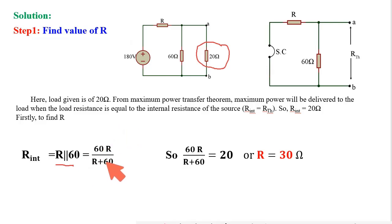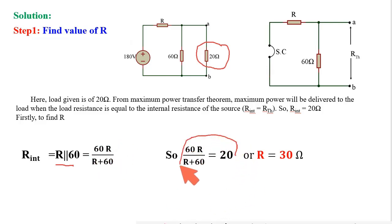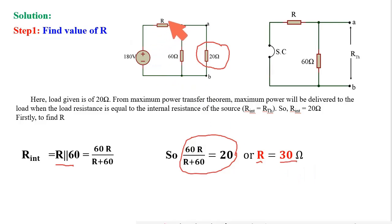RTH equals R parallel 60 ohm. This RTH should be equal to the load resistance to get maximum power, so this is equal to 20 ohm. Using this relation, I got the value of R is 30 ohm. So the first answer: the value of R should be 30 ohm to get maximum power at load 20 ohm.